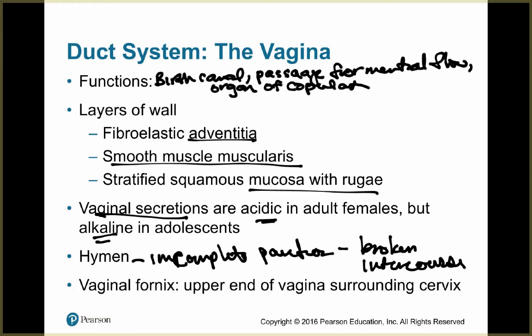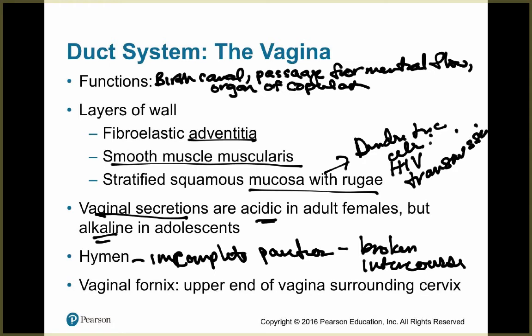Within the vaginal mucosa are dendritic cells, thought to provide a route for HIV transmission. Because the uterus tilts away from the vagina, attempts by an untrained person to induce an abortion by entering the uterus surgically can puncture the posterior wall of the vagina — causing hemorrhaging. If the instrument is not sterile, it can cause peritonitis.